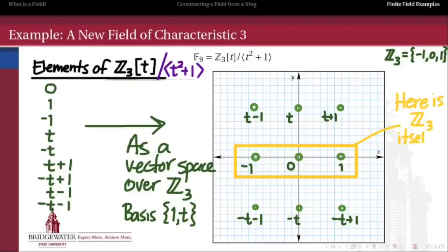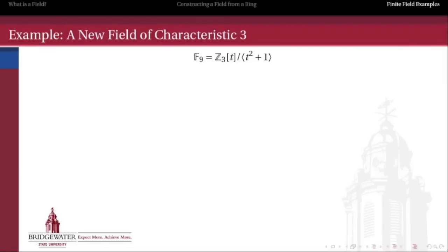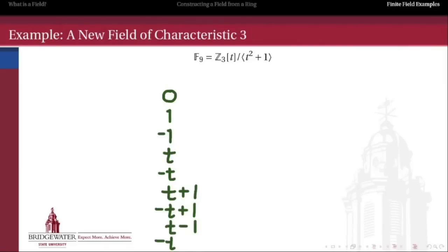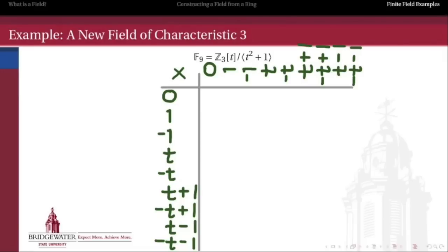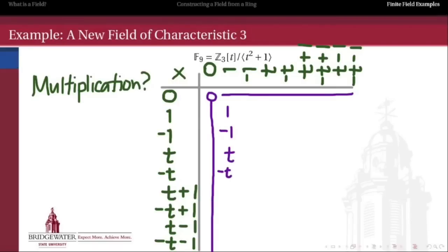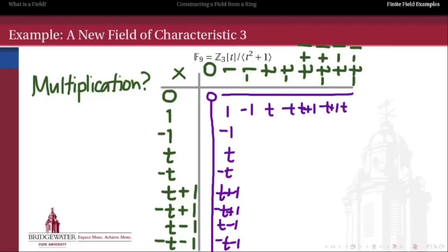We can also see Z mod 3 itself hiding as a subfield inside of Z3 adjoined t — just our x-axis in the vector space picture. Now, what about the multiplicative structure? One way to get a handle on it would be to brute-force a multiplication table for the residue classes. But there are nine elements, so we'd have to fill in 81 entries. We know what multiplication by 0 and 1 are, but beyond that, there's a lot, and that's really not efficient.